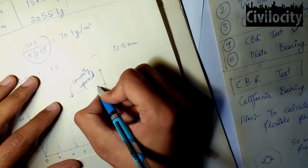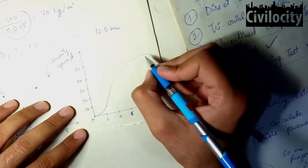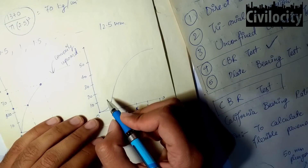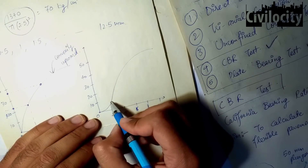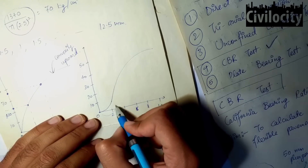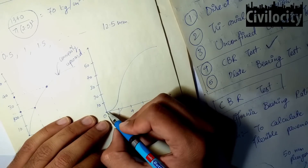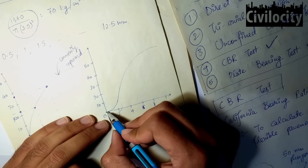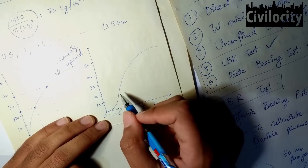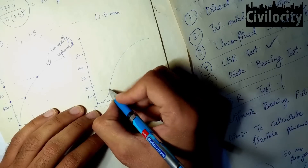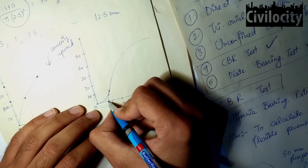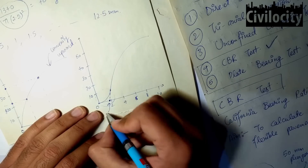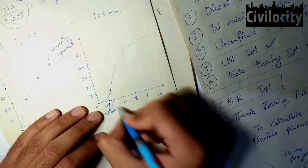The second type of curve starts with concavity upward, then turns into convexity. We do not use the concave portion as it affects our results. This can happen due to slushiness of the soil at the surface, uneven soil surface, or a slightly tilted plunger. To correct this curve, we draw a tangent from the steepest point where the convex upward curve begins, and where this tangent intersects the x-axis becomes the new corrected origin.